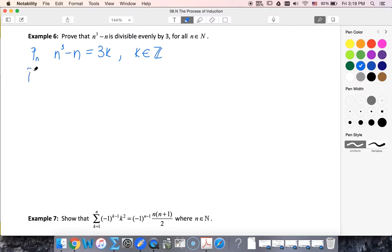Okay, so let's show that it's true for P sub 1. So we get 1³ - 1, which is equal to 0, which is the same as 3 times 0. So P sub 1 is true.